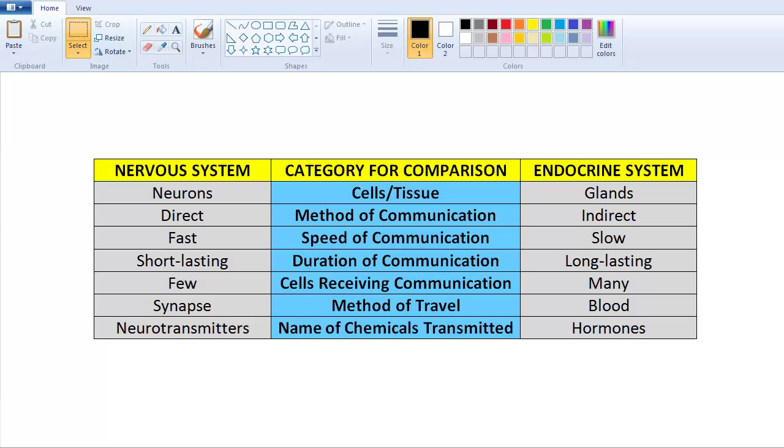And here's a little summary. Let's put together a little chart in case you want to take a screenshot at it. On the left side, you have the nervous system. On the right side, the endocrine system. And down the middle, in blue, you have the categories for comparison.